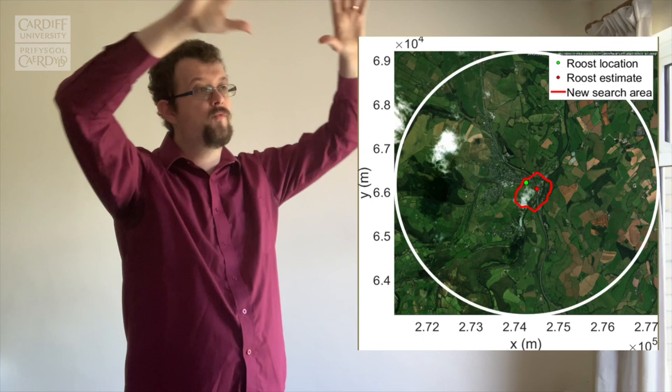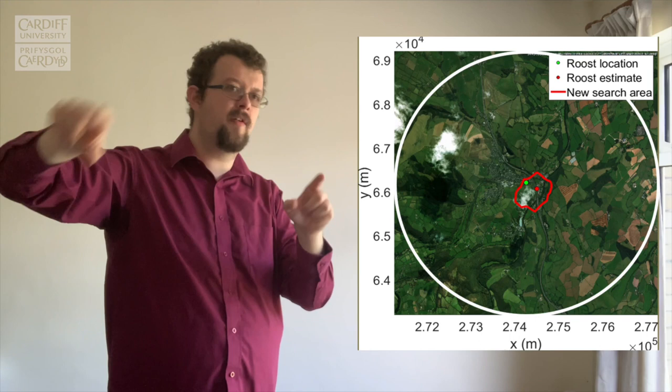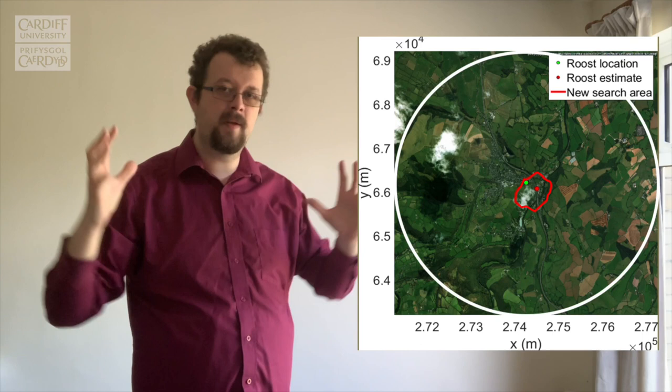The results are outstanding. Currently, ecologists are searching for roosts over areas that could be three kilometers in radius — just think how big that area is. The mathematics is helping us shrink that down to 250 meters. Still not very small, but it's a lot better than three kilometers.